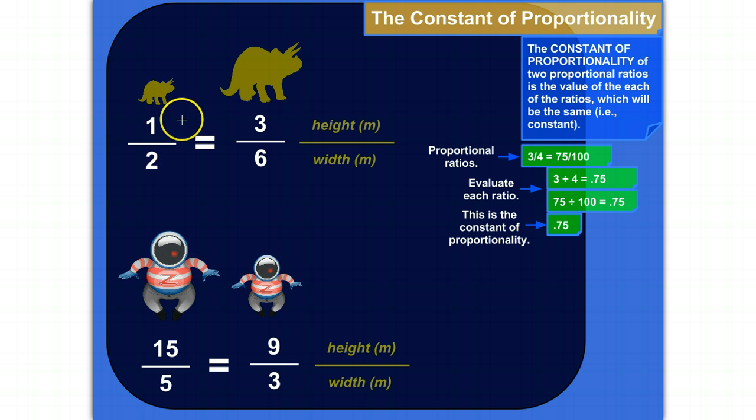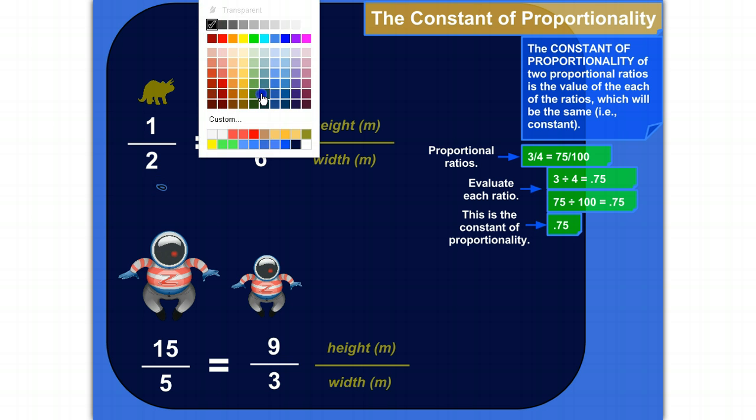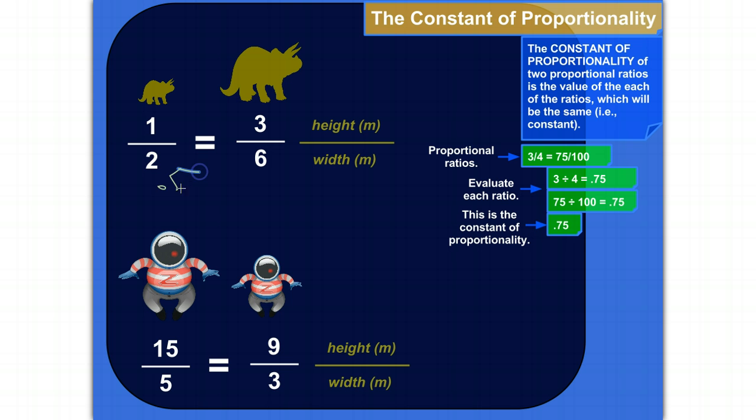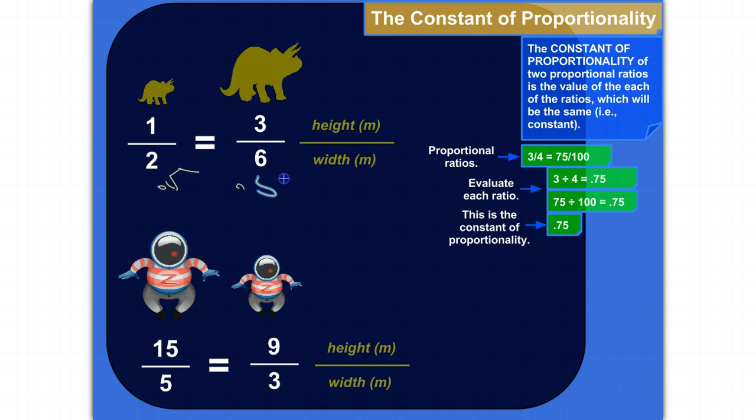To see what the value of the ratio is, you can just get the decimal equivalent, which means you take the top number and divide it by the bottom. So 1 divided by 2, you can probably do that one in your head, is 0.5. And 3 divided by 6 equals 0.5. So these proportional ratios have the same value, 0.5. This 0.5 is called the constant of proportionality.